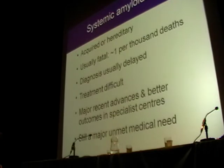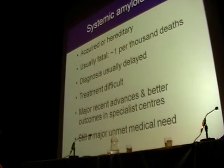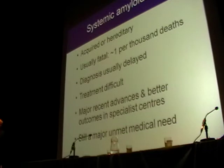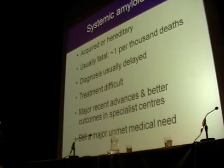Systemic amyloidosis can be either acquired as a complication of a pre-existing disease, or it can be hereditary. The diagnosis is usually delayed because the clinical presentation can be extraordinarily varied, and most clinicians see very few patients with systemic amyloidosis in their entire career. They don't think of it, they don't perform the appropriate tests, and so the diagnosis is made late — by which time there is usually irreversible organ damage in heart, kidneys, liver, and nerves.